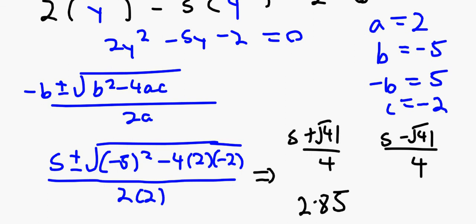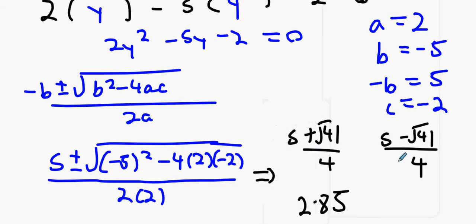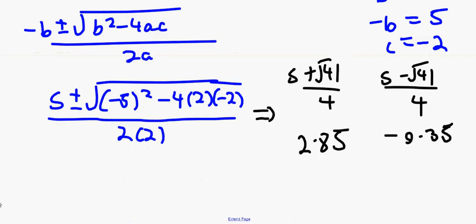Okay. And just change it to a minus at the very top. There you go. And you get 5 minus root 41 over 4, which is minus 0.35. Okay. So, because y represents 3x minus 1, what we're going to do down here is say that 3x minus 1 equals 2.85.